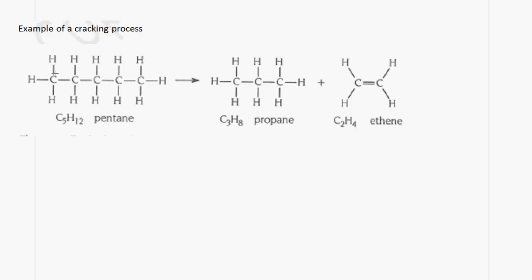This is an example of a cracking process. We have pentane, which has five carbon atoms. When we perform cracking on it, we get propane and ethene. Notice we have five carbon atoms on the left hand side and five on the right hand side. As indicated earlier, one of the products of cracking is usually an alkene, and the functional group present in an alkene is the carbon to carbon double bond.